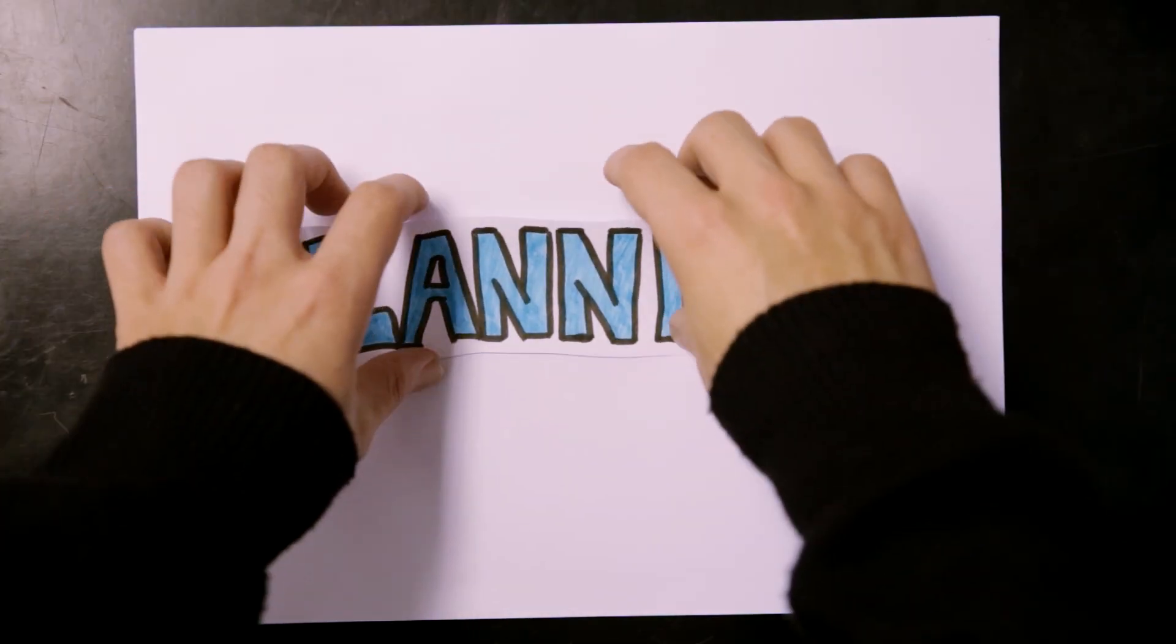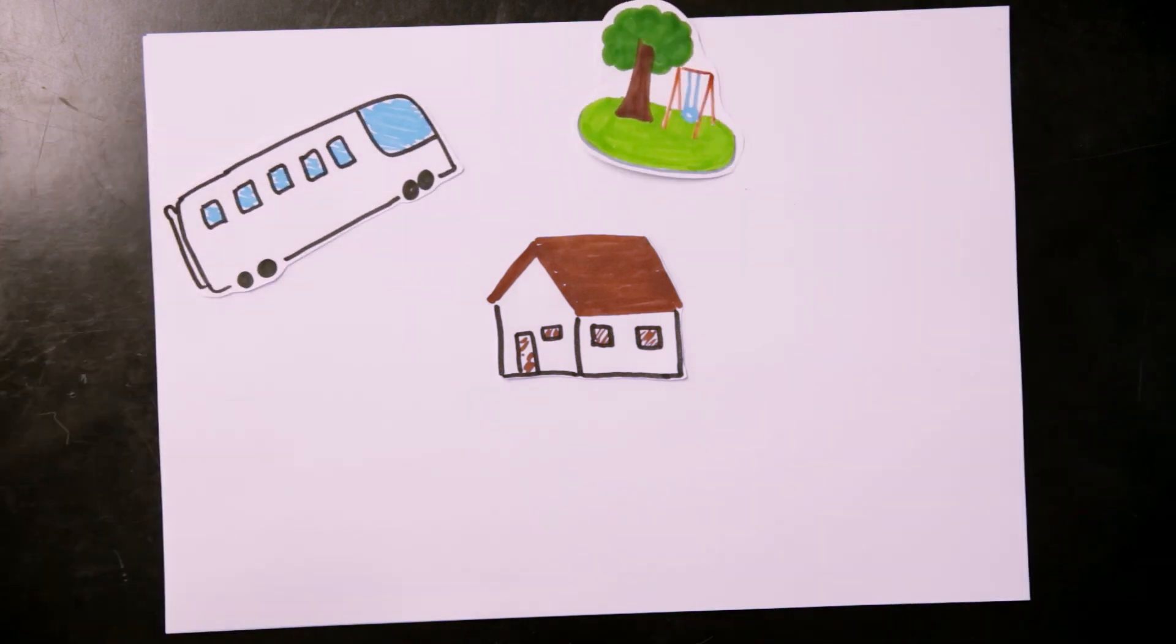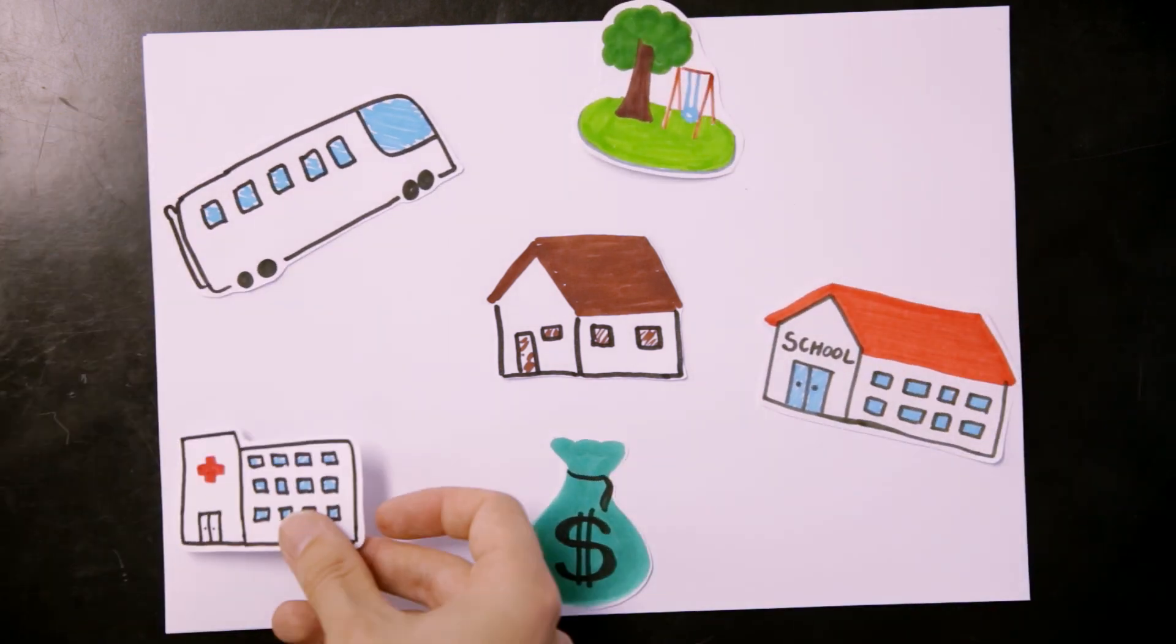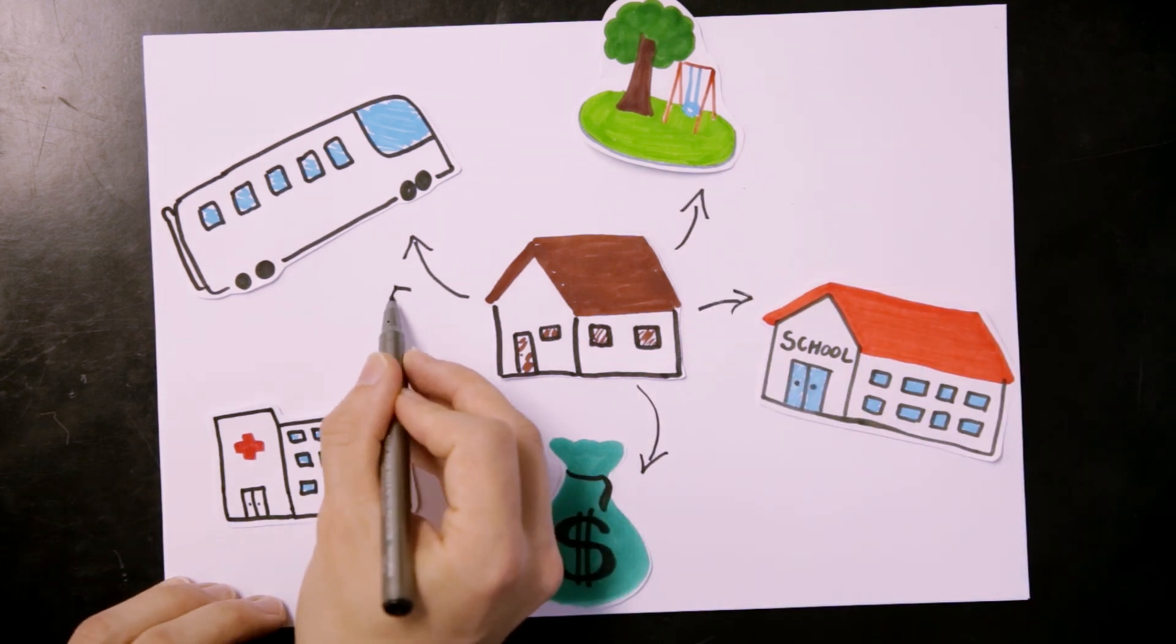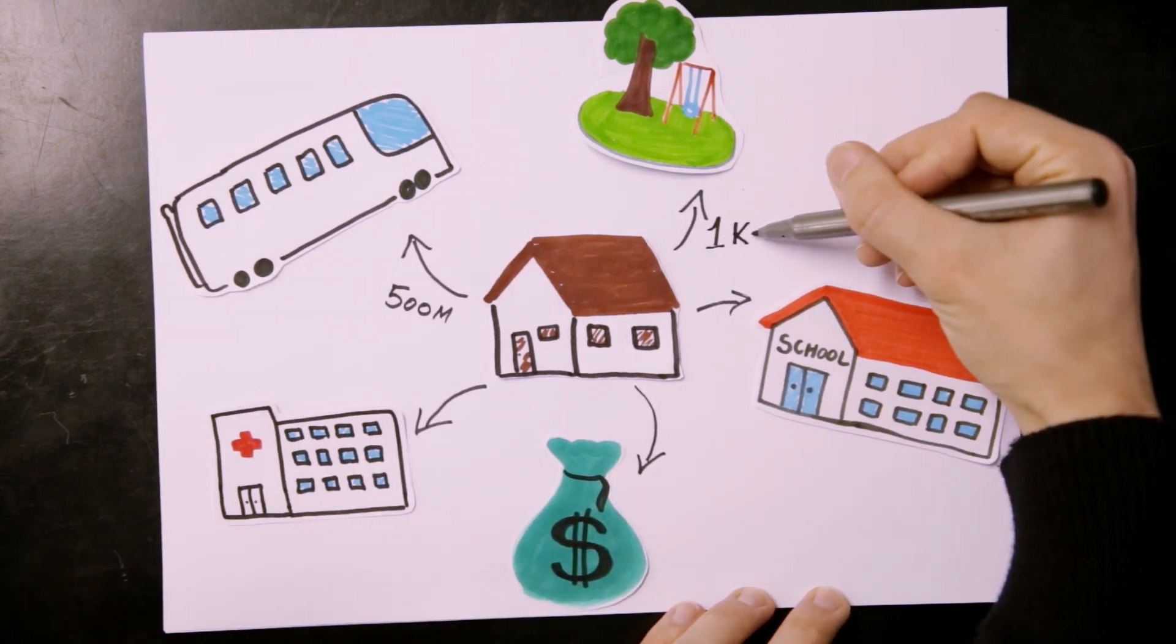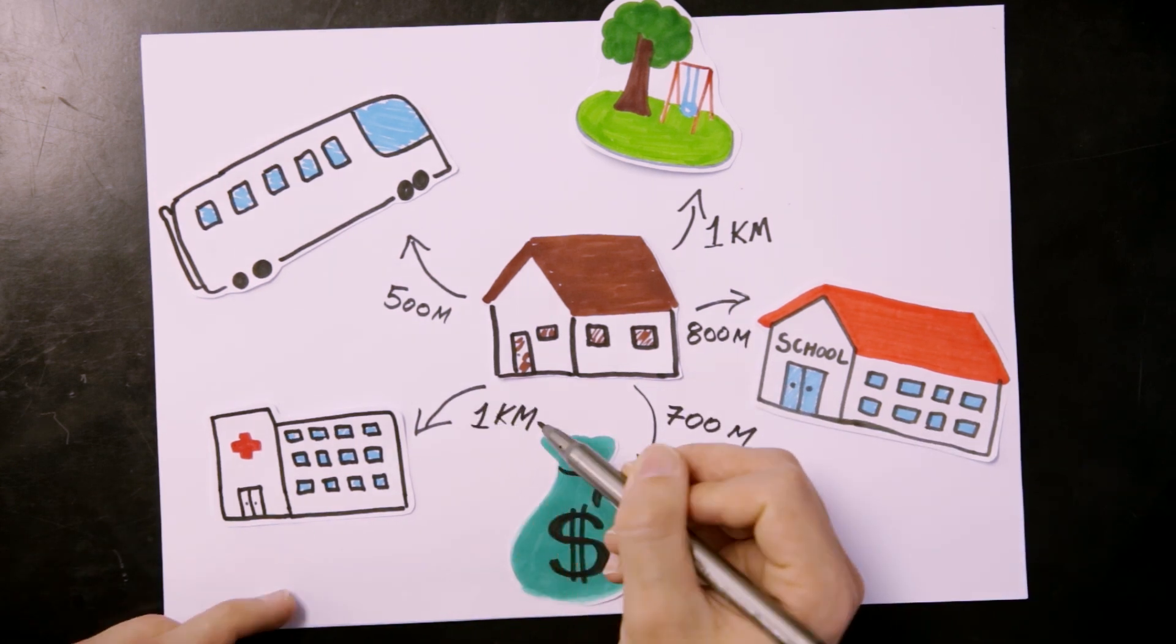Planning. Planning compact neighbourhoods with access to public transportation, parks, schools, shopping and other activities means people can find more of what they need closer to where they live and work. Compact cities also reduce travel distances and encourage walking and cycling.